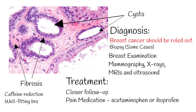Fibrocystic breast has a good prognosis and is usually not associated with serious complications. It commonly subsides after menopause. Fibrocystic breast is not associated with breast cancer, and in many cases the risk of breast cancer is not increased. If it is characterized by hyperplasia, then the risk is increased 2 to 3 folds.